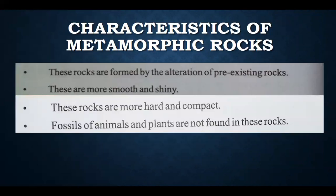The first characteristic is that these rocks are formed by alteration of pre-existing rocks. These rocks existed before, but when a new process acts on them, they convert into new metamorphic rocks — pre-existing rocks which form new rocks after alteration. The second characteristic is that these rocks are more smooth and shiny. If you can see the rocks on the surface, they are very smooth and shiny. The third characteristic is that these rocks are more hard and compact. Because of pressure, rocks inside the surface of the earth are very hard — they have continuous weight on them, that's why they are hard and compact.